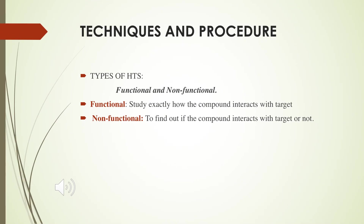There are two types of HTS: functional and non-functional. Functional HTS gives us a detailed explanation of how our compound is interacting with the target — how the interaction is happening. Whereas non-functional HTS gives us information on whether our compound is interacting with the target or not — only whether the interaction is happening, not how.